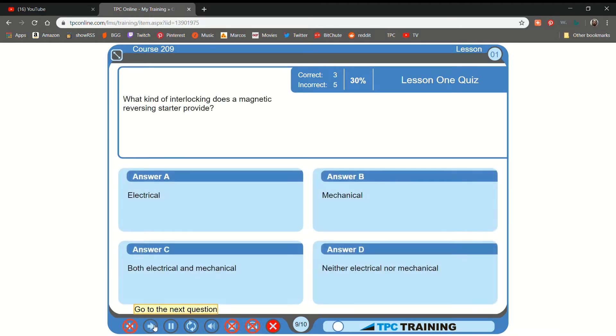What kind of interlocking does a magnetic reversing starter provide? A. Electrical... B. That is not correct.